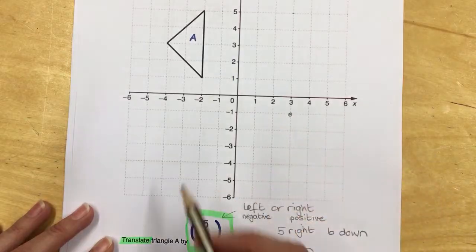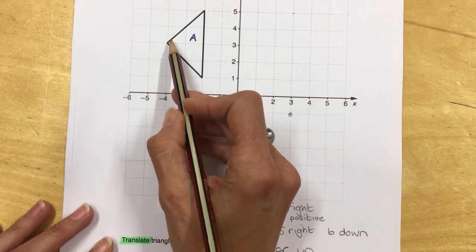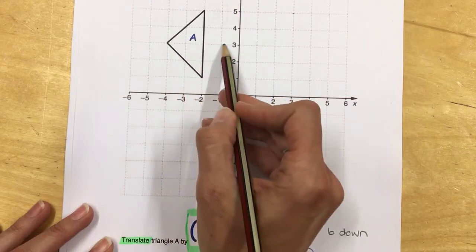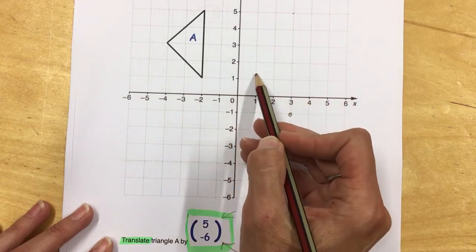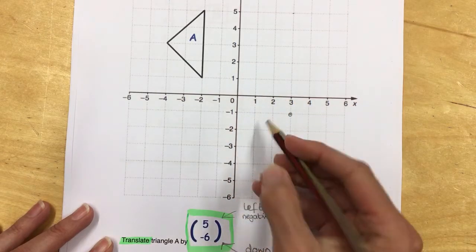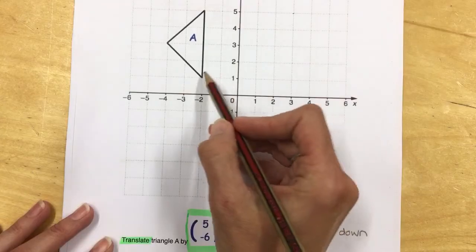Now we apply that to all three corners of the shape. Five to the right—one, two, three, four, five—then six down—one, two, three, four, five, six. Then the final point.